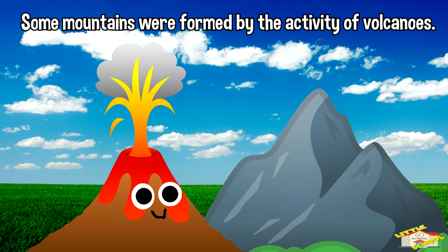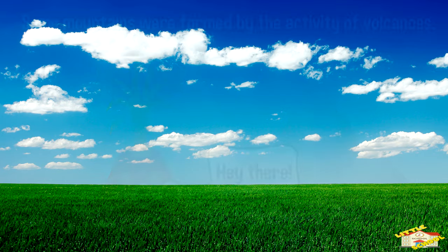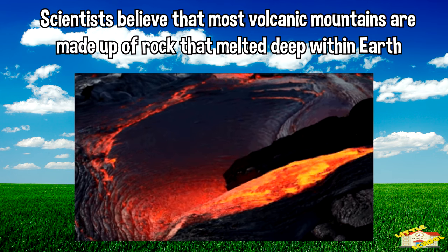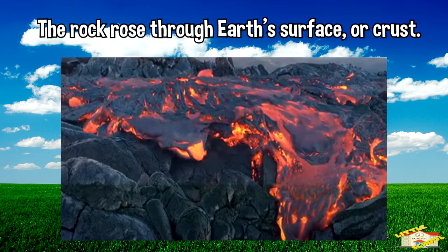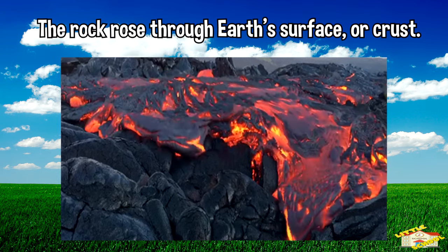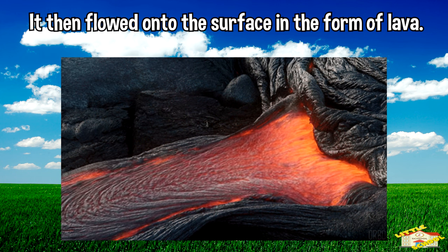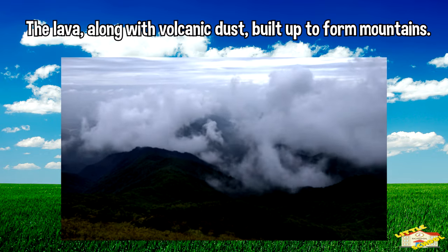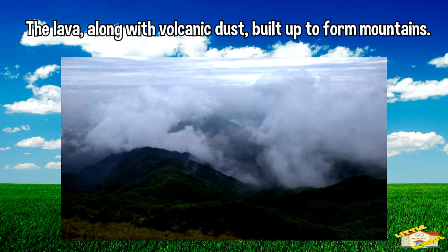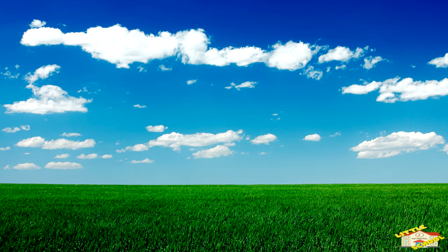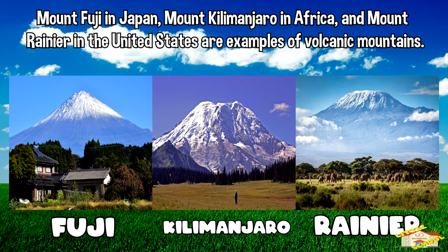Some mountains were formed by the activity of volcanoes. Scientists believe that most volcanic mountains are made up of rock that melted deep within the earth. The rock rose through the earth's surface, or crust, and flowed onto the surface in the form of lava. The lava, along with volcanic dust, built up to form mountains. Volcanic mountains are typically steep and cone-shaped. Mount Fuji in Japan, Mount Kilimanjaro in Africa, and Mount Rainier in the United States are examples of volcanic mountains.